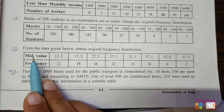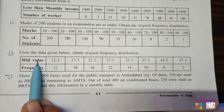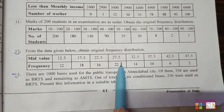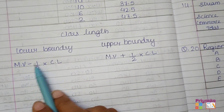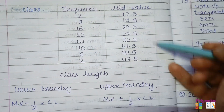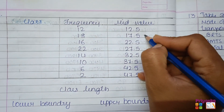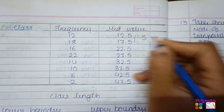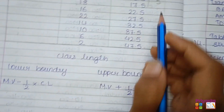Question number 12: From the data given below, obtain the original frequency distribution. Only mid value and frequency are given. Use the formula: lower boundary equals mid value minus half of class length; upper boundary equals mid value plus half of class length. Class length is not given, so find it from the distance between 12.5 and 17.5, which is 5.